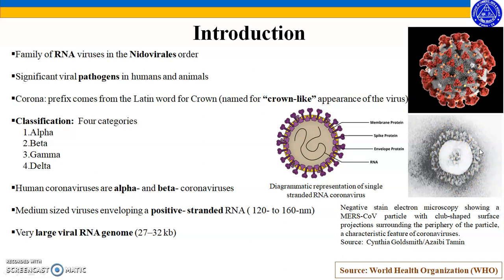There are four classifications of coronaviruses. They belong to categories alpha, beta, gamma, and delta. Human coronaviruses are alpha and beta coronaviruses, so the coronaviruses we will talk about — the ones we commonly hear about — fall in the first two classifications: alpha and beta.